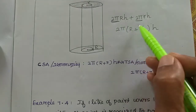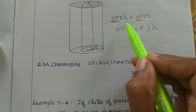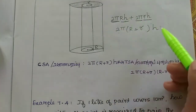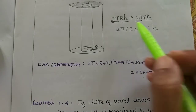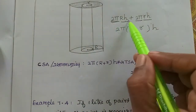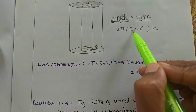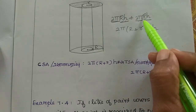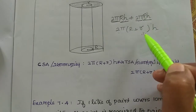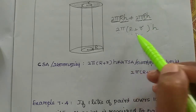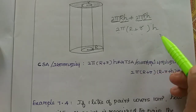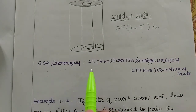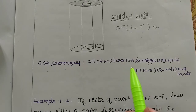So the curved surface area is: 2π capital R h plus 2π small r h. Here 2π is common, so we factor it out: 2πh(R + r). That is the curved surface area of the hollow cylinder.